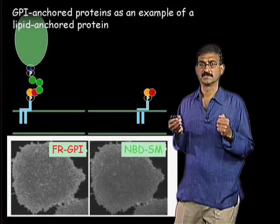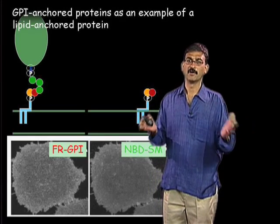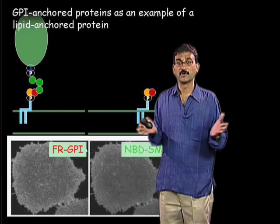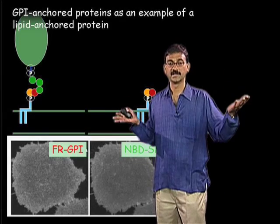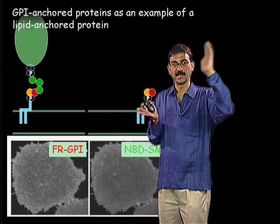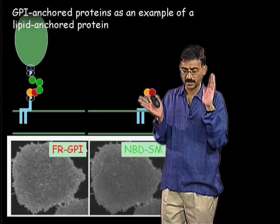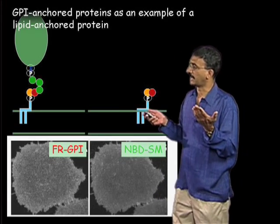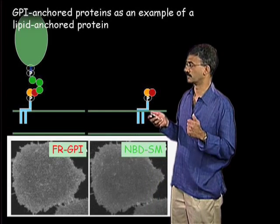GPI-anchored proteins, as discussed in part one, are an example of membrane components that are some of the original reasons why the Raft hypothesis was proposed — because they are sorted to different surfaces of epithelial cells, to the apical surface as opposed to the basolateral. In the endocytic process, we find that GPI-anchored proteins are also sorted.